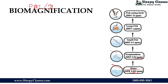Then DDT is consumed by small fish, then large fish, then fish-eating birds, and ultimately the concentration of DDT increases from 0.5 ppm to 2 ppm, and then to 25 ppm. This shows the whole food chain effect across trophic levels.